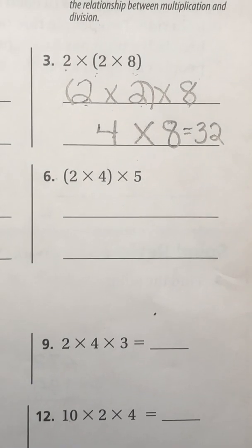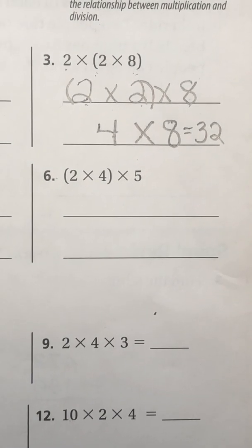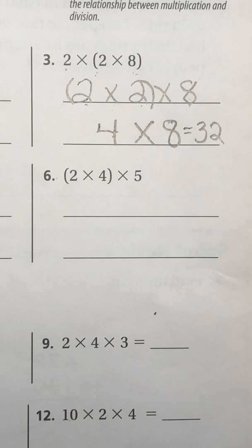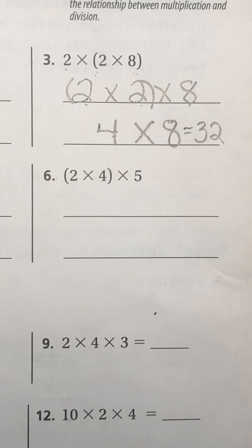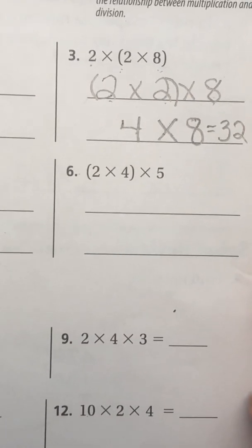If you need to use one of the strategies that we learned in multiplication to help you find the answer, please do that. Maybe on a scrap sheet of paper you could show equal groups. You could skip count. You could use a number line. You can make an array. You could make a bar model. All of those strategies would help you if you need help solving the multiplication equation.